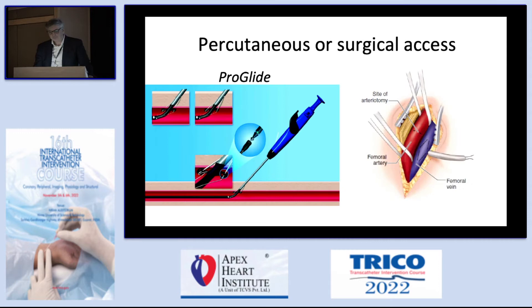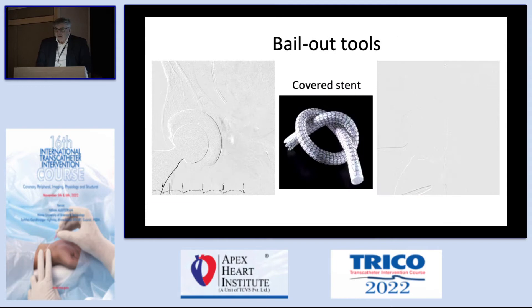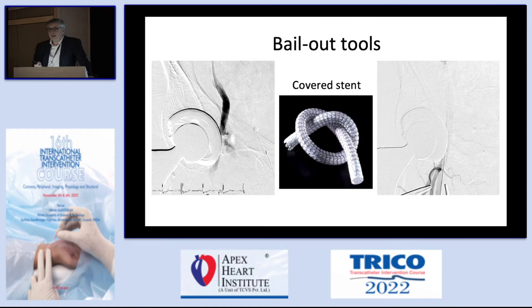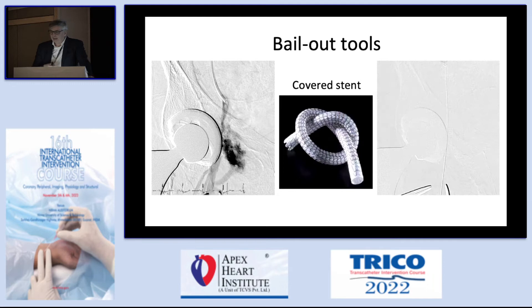Most sites will use ProGlide, or what is now called ProStyle in Europe and the US — it's the same concept. You put one or often two in; it's a suture going into the wall. You put it in at the beginning, leave the suture, and tighten it up at the end of the procedure. If surgeons prefer a surgical cutdown, that is also possible. Importantly, be ready for a bailout scenario — have the correct balloon size and covered stent size in the room. If there is a severe leak after closure, inflate a balloon first, and if that doesn't help, deploy a covered stent. It is safe to use covered stents in these arteries.